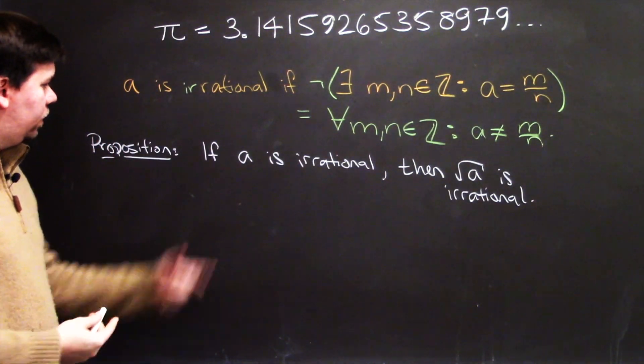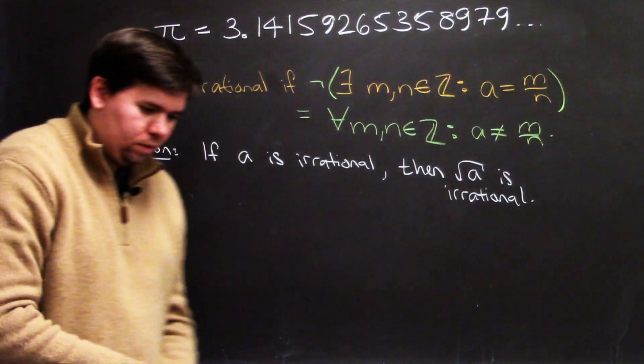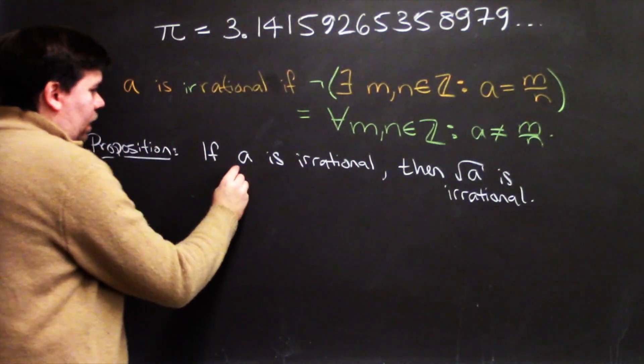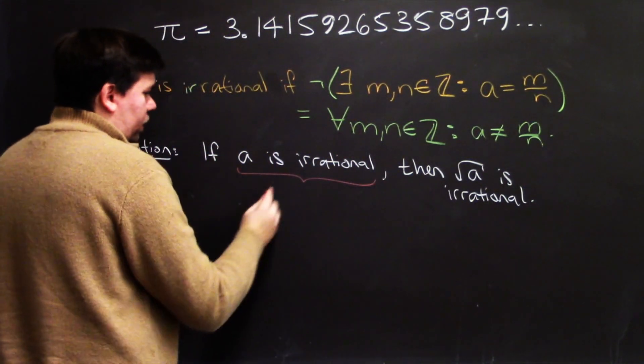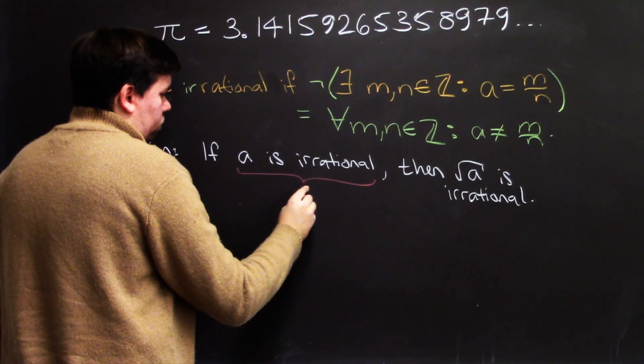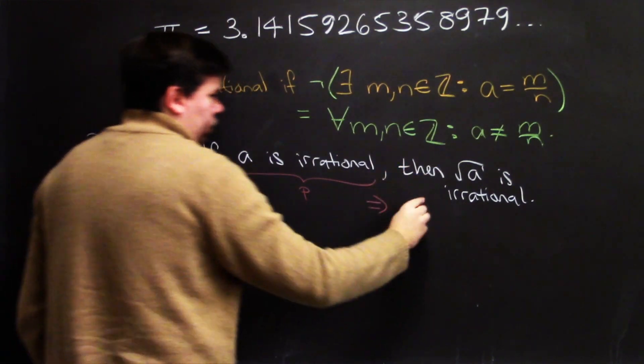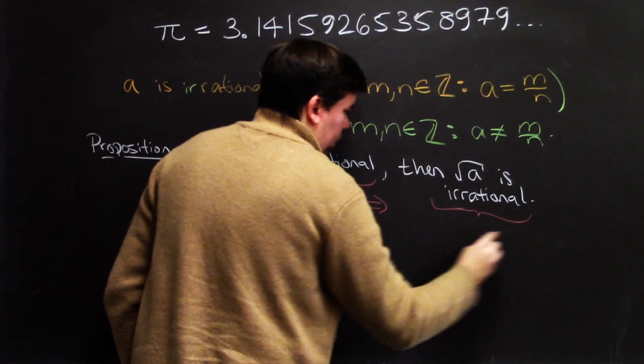You might think that if a is irrational, then you want to conclude that the square root of a is irrational as well. It seems like a reasonable proposition. So let's think about how we might go about proving this. First of all, we can express this symbolically. If a is irrational, we can say that's proposition p, and that implies proposition q,